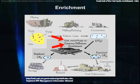The product of this stage of the nuclear fuel cycle is enriched uranium hexafluoride, which is reconverted to produce the enriched uranium oxide. Let's look at how these two processes work.